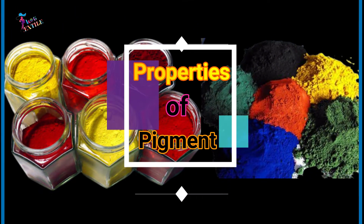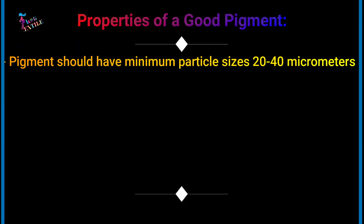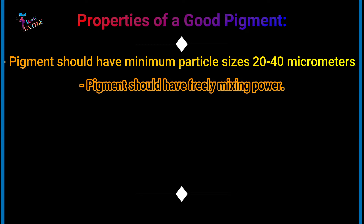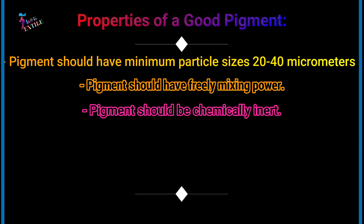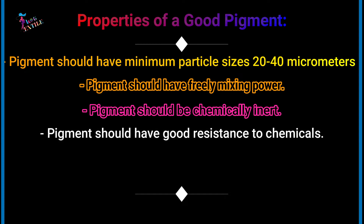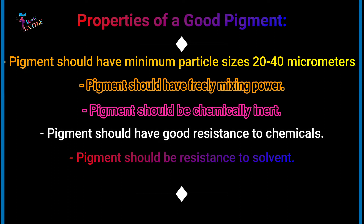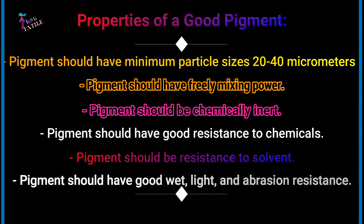Properties of a good pigment. Pigments should have minimum particle sizes of 20 to 40 micrometers. Pigments should have freely mixing power. Pigments should be chemically inert. Pigments should have good resistance to chemicals. Pigments should be resistant to solvent. Pigments should have good weight, light, and abrasion resistance.